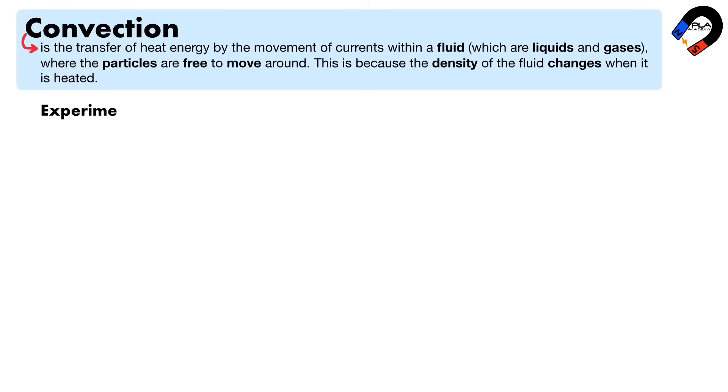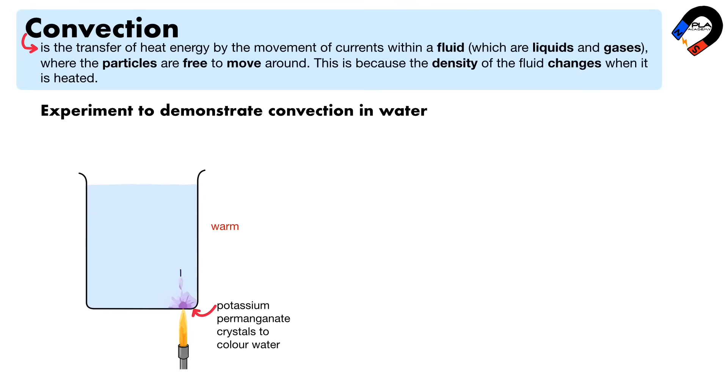An experiment to demonstrate convection in water: A few crystals of potassium permanganate are placed at the bottom of a beaker of water. They dissolve and color the water near them purple. When the water is heated, the purple water rises above the Bunsen flame, moves across and then falls at the other side of the beaker before returning to the flame to be heated again. This movement of water is called a convection current.